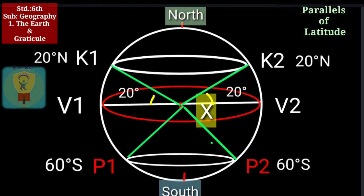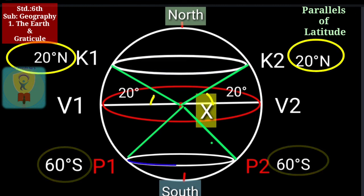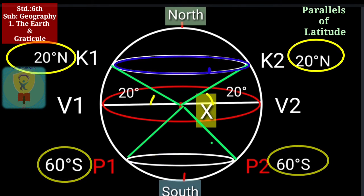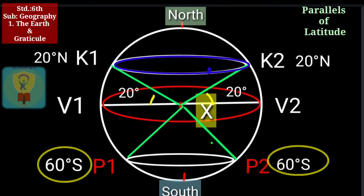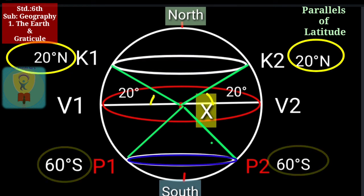Now students, we are going to study parallels of latitude. To understand parallels of latitude, we must understand the activity we just did. In the earlier activity you must have understood that the ellipse — meaning the oval circle — drawn by joining the 20-degree points is larger than the ellipse that joins the 60-degree points, and the distances X-K1 and X-P2 are the same. The reason behind it is that we are dealing with a sphere.